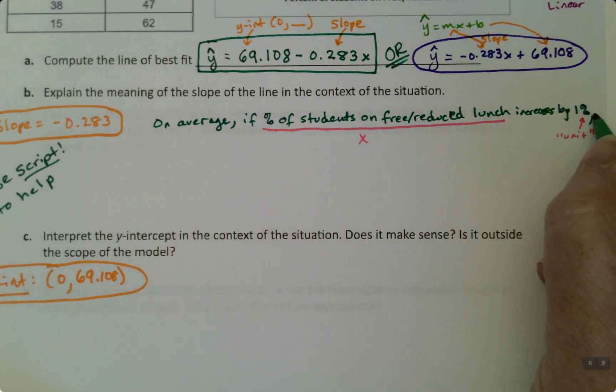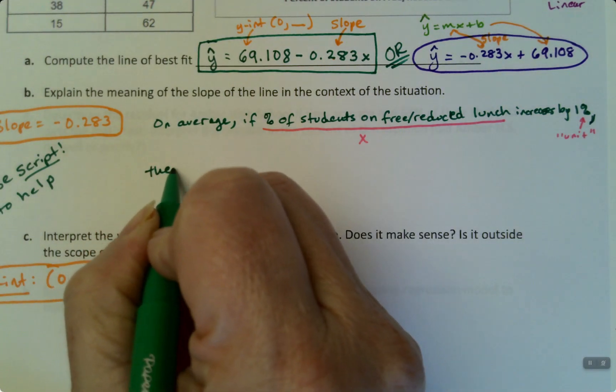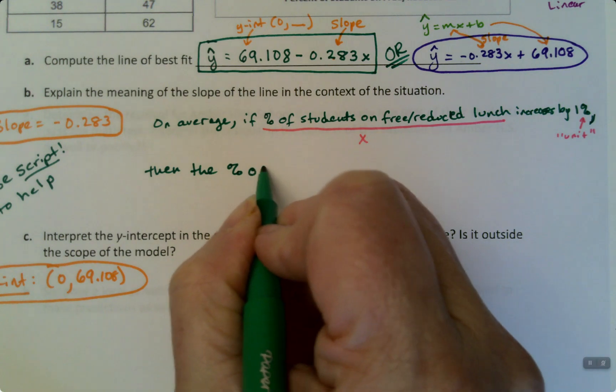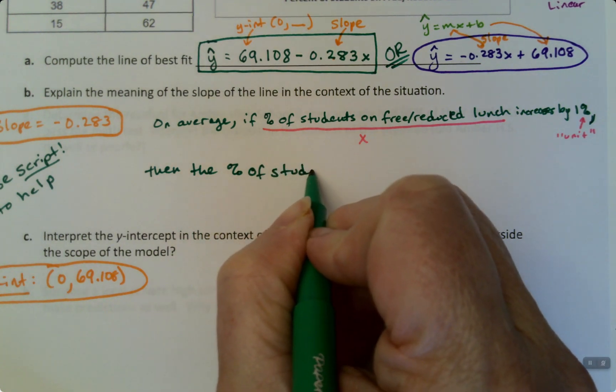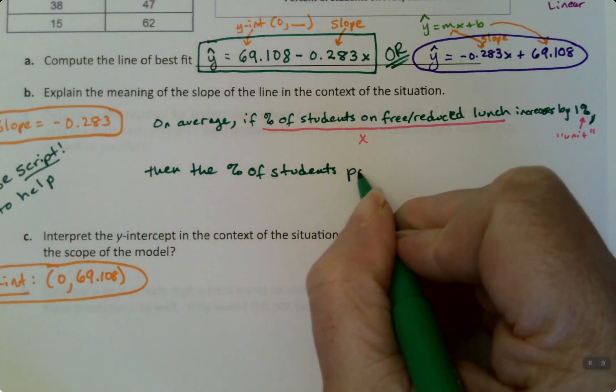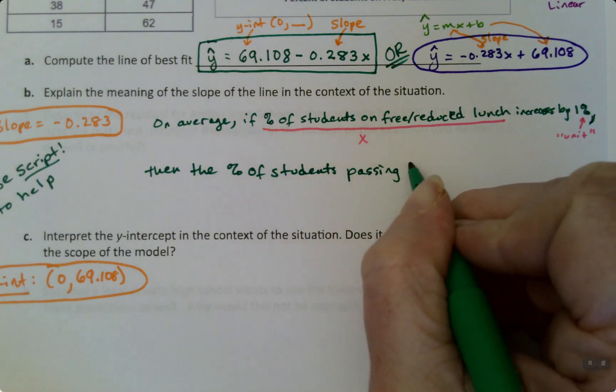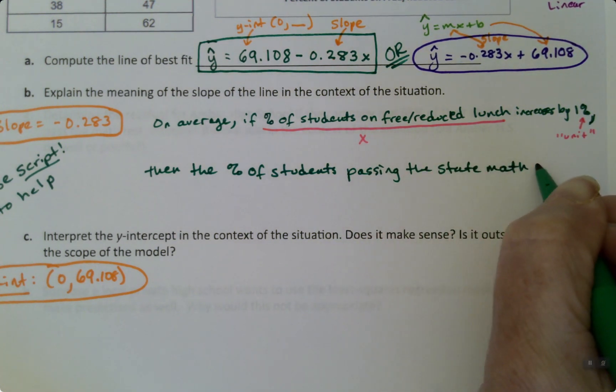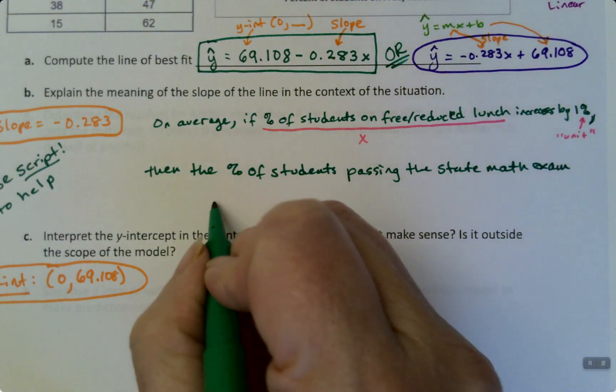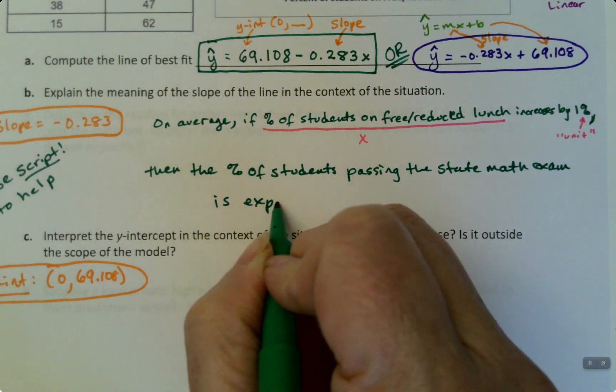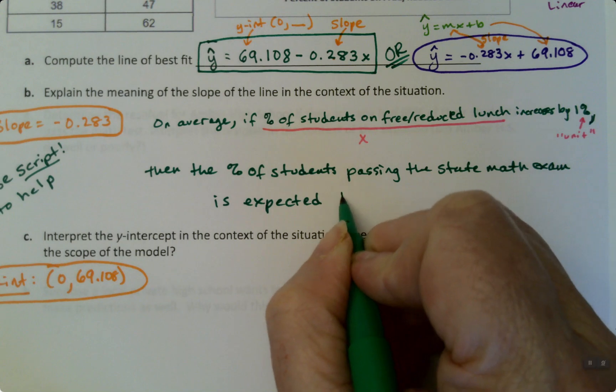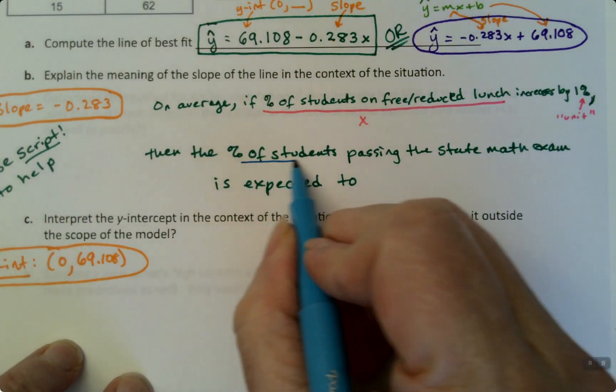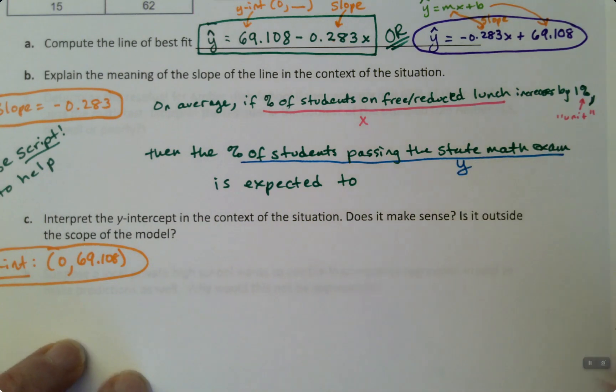Okay, so on average if X, if the free reduced lunch percentage increases by one percent, then the Y, the percent of students passing the state math exam is expected... I mean we don't know for sure, but it's expected to, and now we have to choose.